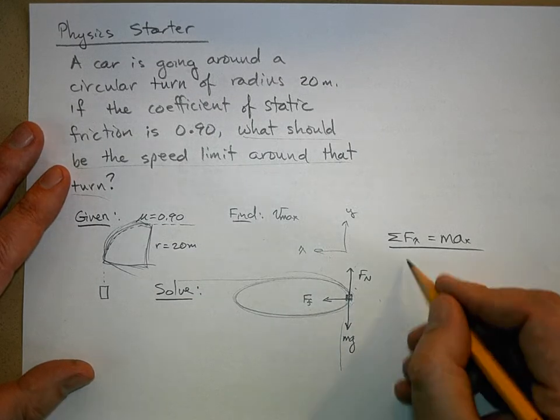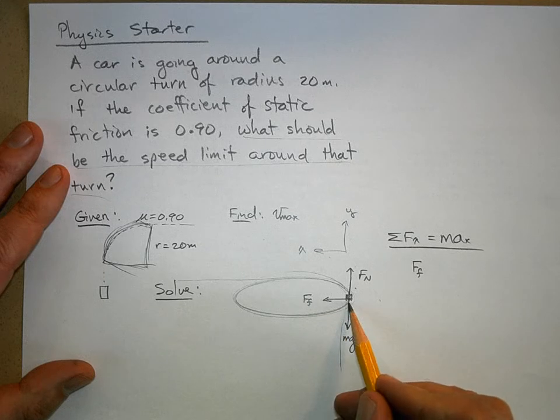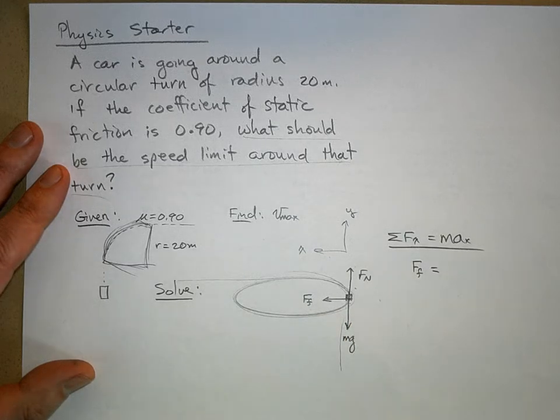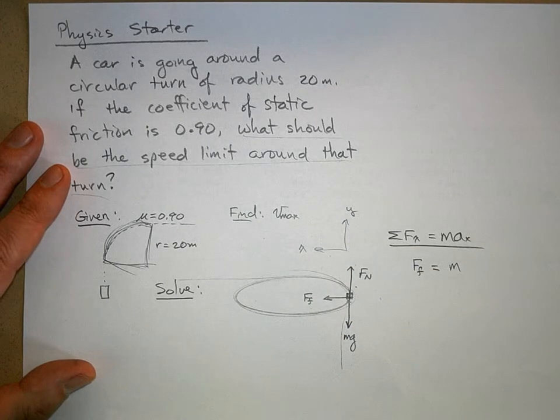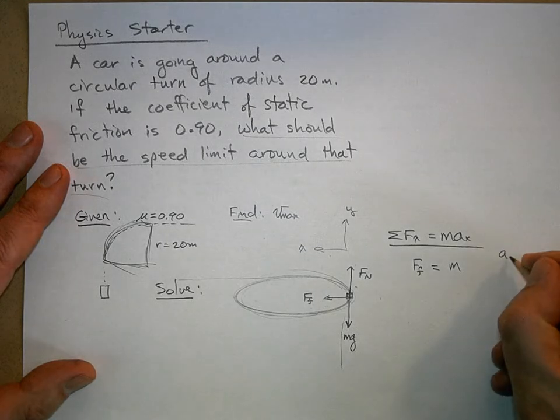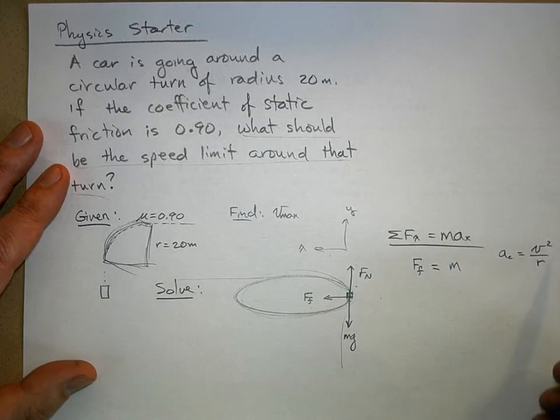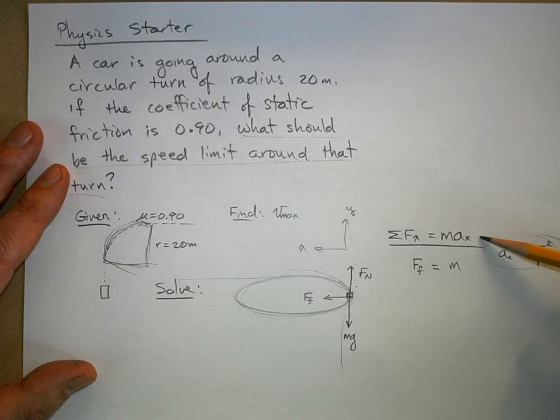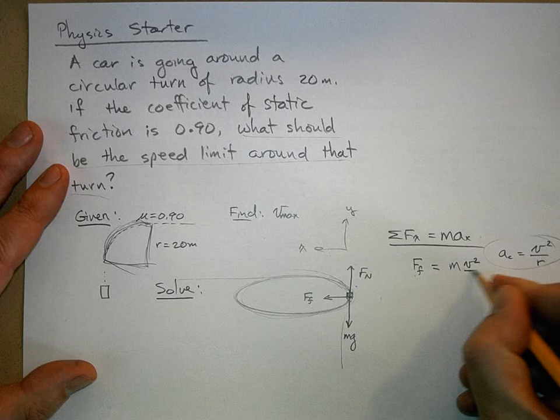The force of friction is the only force acting in the x direction on my car, and that's going to equal ma. There is an acceleration that doesn't change our speed but does change our direction—that would be centripetal acceleration. So a here is centripetal and equals v squared over r.